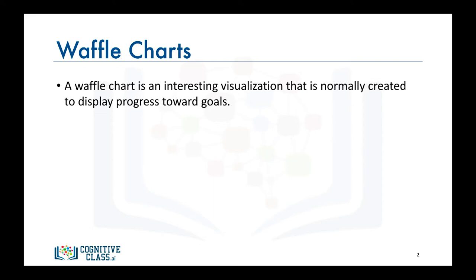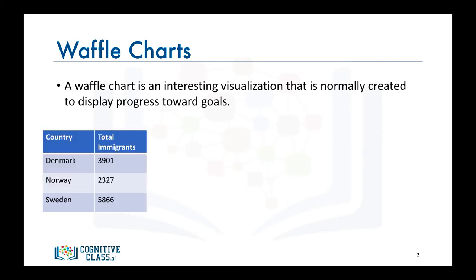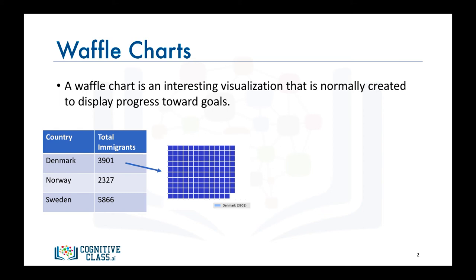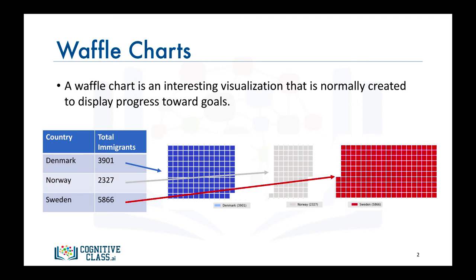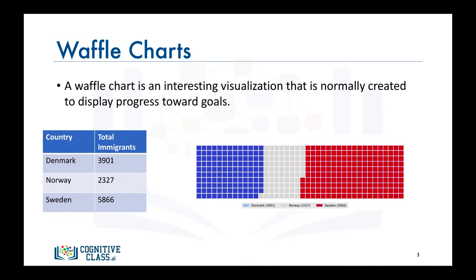For example, say immigration from Scandinavia to Canada is comprised only of immigration from Denmark, Norway, and Sweden, and we're interested in visualizing the contribution of each of these countries to the Scandinavian immigration to Canada. The main idea is that for a given waffle chart whose desired height and width are defined, the contribution of each country is transformed into a number of tiles proportional to the country's contribution to the total. So the more the contribution, the more the tiles — resulting in what resembles a waffle when combined, hence the name waffle chart.